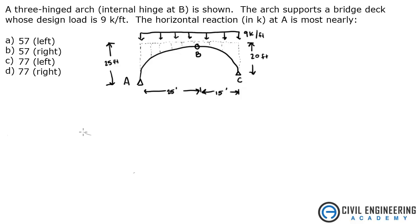The problem states that a three-hinged arch with an internal hinge at B is shown. The arch supports a bridge deck whose design load is nine kips per foot. The horizontal reaction in kips at A is most nearly what? So here's A. We know that we've got a vertical reaction and a horizontal reaction. We'll call it AY and AX.